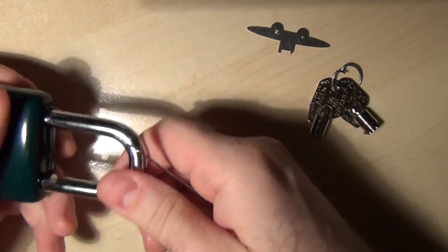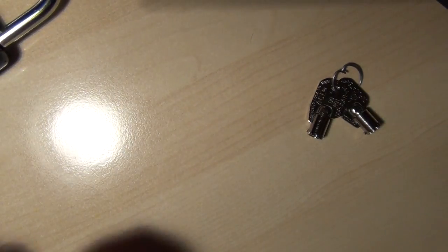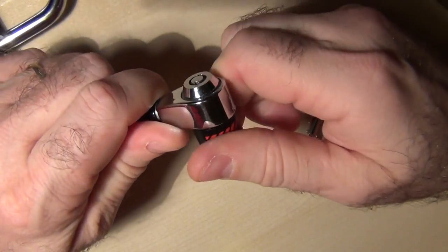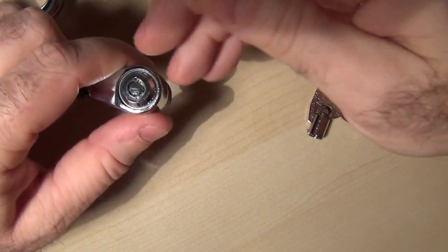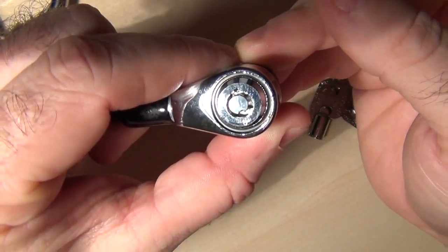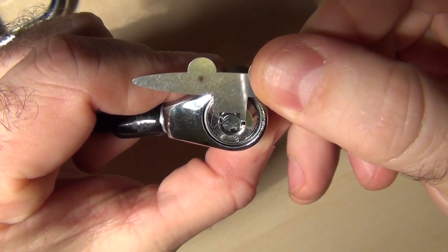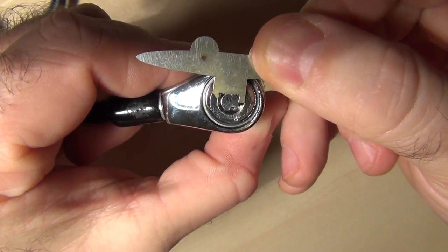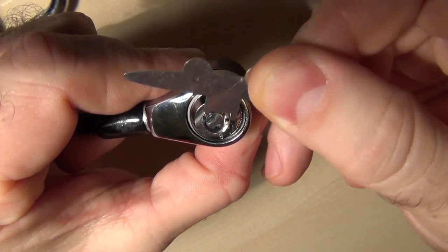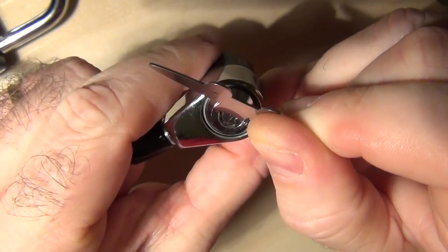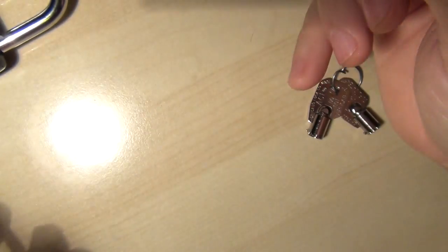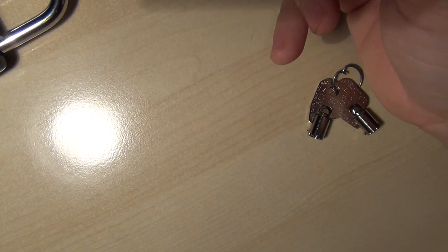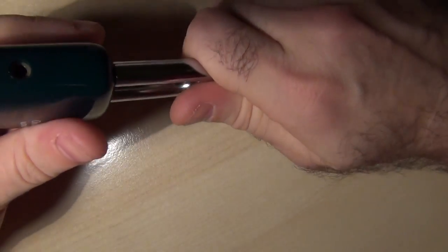So one thing I did want to point out about the Mantis is that if you have something like this PC Guardian, which is a lock for a computer that you can use to cable to like a desk or something like that, something that's not going to budge, it's got a very small core as you can see. And the Mantis is pretty much for the Ace and Ace 2 cores specifically I think. So as you can see it's not going to work for a smaller core like this. So you have to keep that in mind. You can pick the Ace and Ace 2's all day but anything smaller you're not going to have any luck with that.